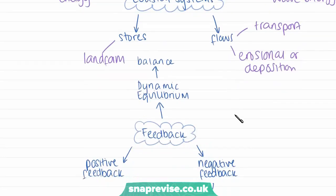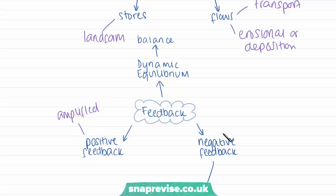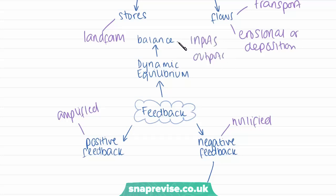Like many other landscapes, coastal landscapes are always changing, and that's why we always have processes of feedback occurring — whether they be positive feedback, which is when the effects of a process are amplified, or negative feedback, where effects are nullified. This is because systems are always trying to work towards dynamic equilibrium, which is a balance between our inputs and outputs so that the landforms or stores remain balanced and the same.